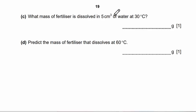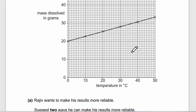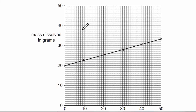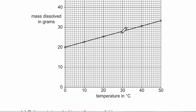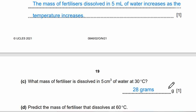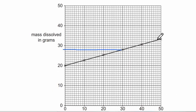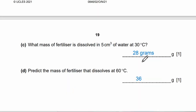Question C: what mass of fertilizer dissolves in 5 cm³ of water at 30 degrees Celsius? Looking at the graph at 30 degrees, it reads 28 grams. Question D: predict the mass of fertilizer that dissolves at 60 degrees Celsius. At 50 degrees it's 33 grams, so at 60 degrees we can add 2 or 3 grams — the answer will be approximately 35 or 36 grams. So this is the end of our discussion.